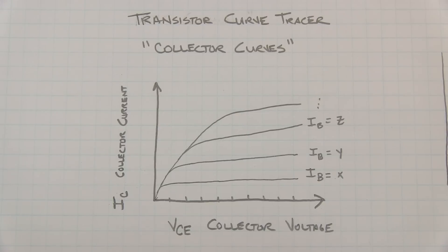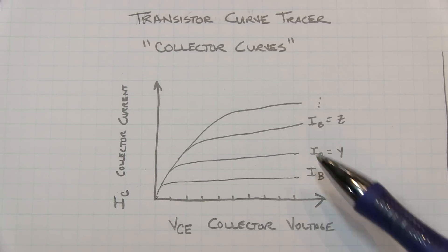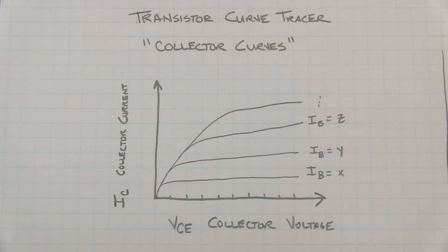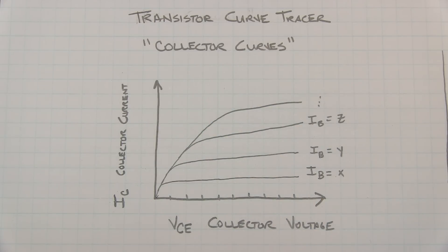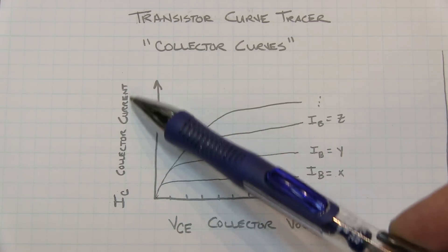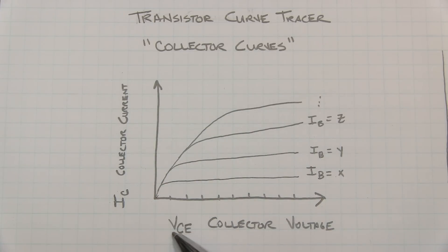For our very basic transistor curve tracer, I wanted to be able to replicate generating this family of curves, typically known as the collector curves for a common emitter-connected transistor. What it really represents is the collector current as a function of collector emitter voltage and a function of base current.